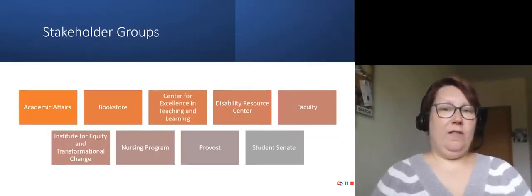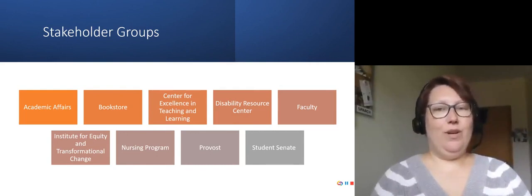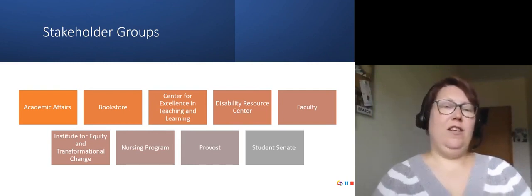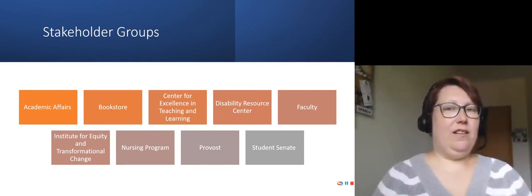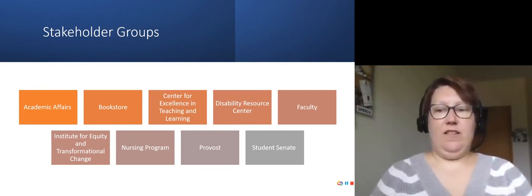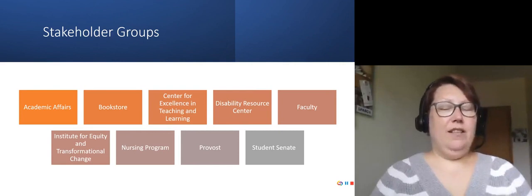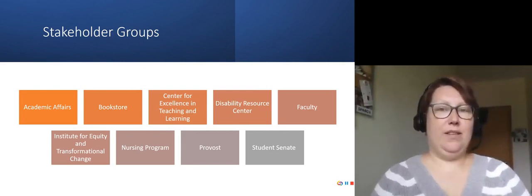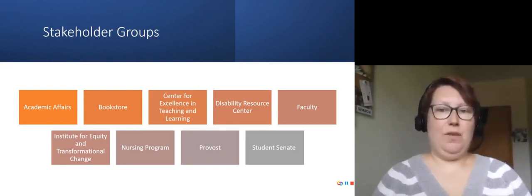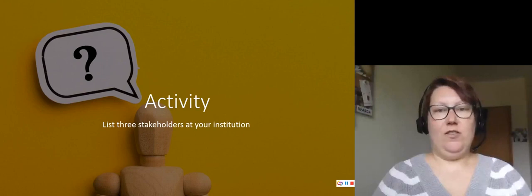Once you've done that high-level overview, identifying your specific stakeholder groups is very important. These would be anyone who has interest in OER textbooks or anyone who might be potentially affected by a change. At my institution, I've identified the following: Academic Affairs, Bookstore, Center for Excellence in Teaching and Learning (the Faculty Center), Disability Resource Center, Faculty, Institute for Equity and Transformational Change, our nursing program specifically because they've incorporated a lot of OER content through the OpenRN program, our Provost, and our Student Senate, which then trickles down to our general student population. Now I encourage you to pause a moment and list three stakeholders at your institution. When you're ready, unpause the video.